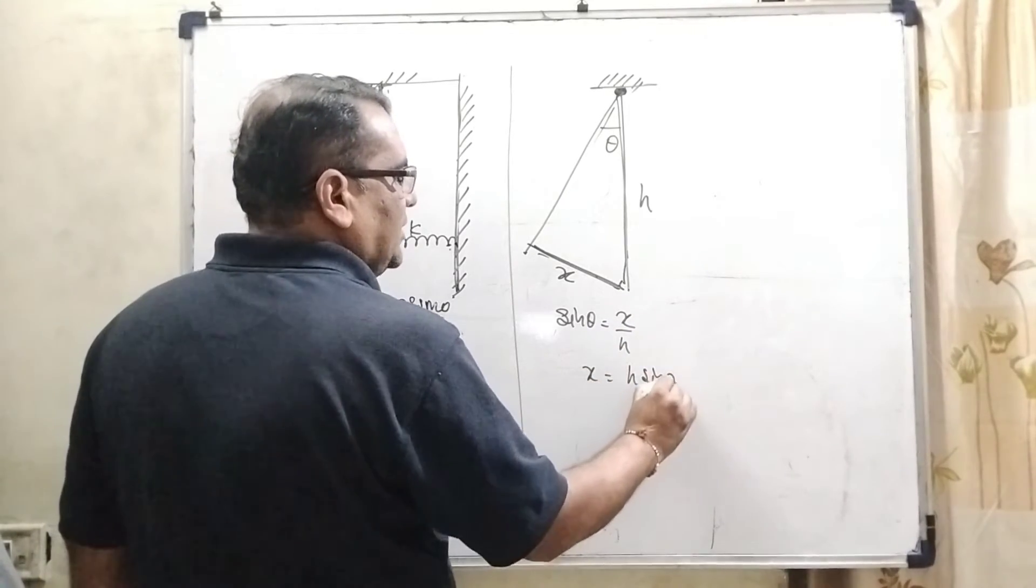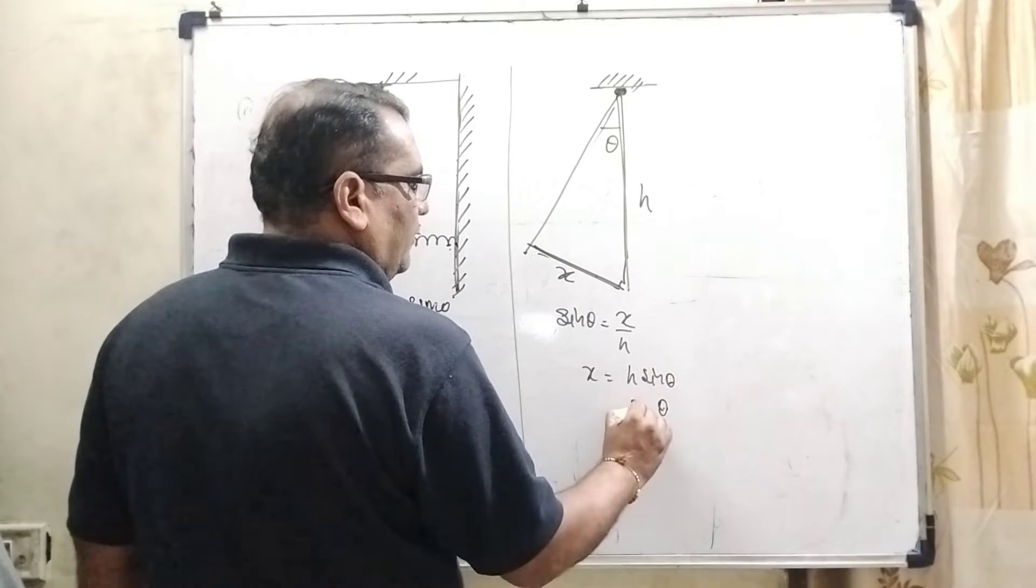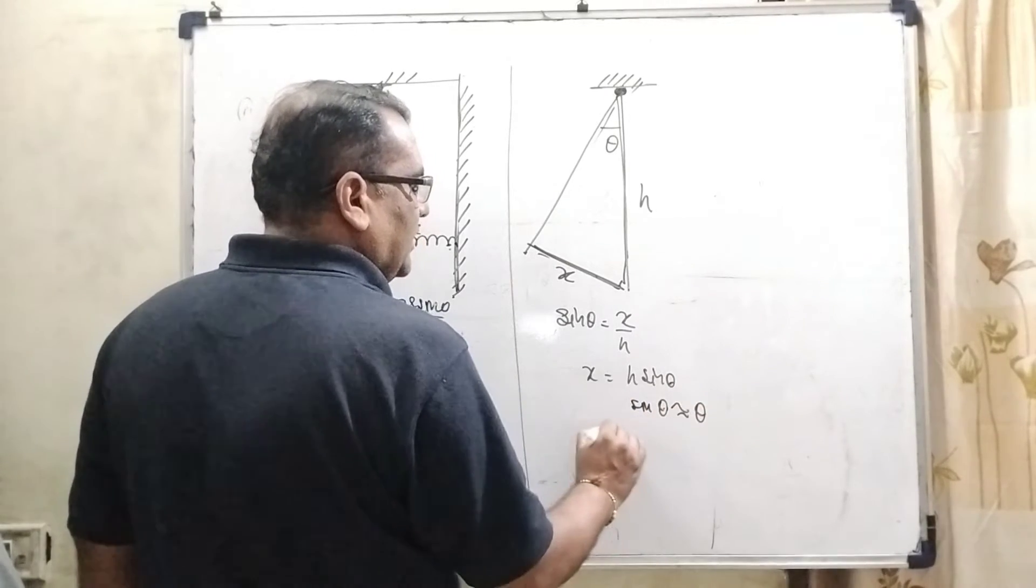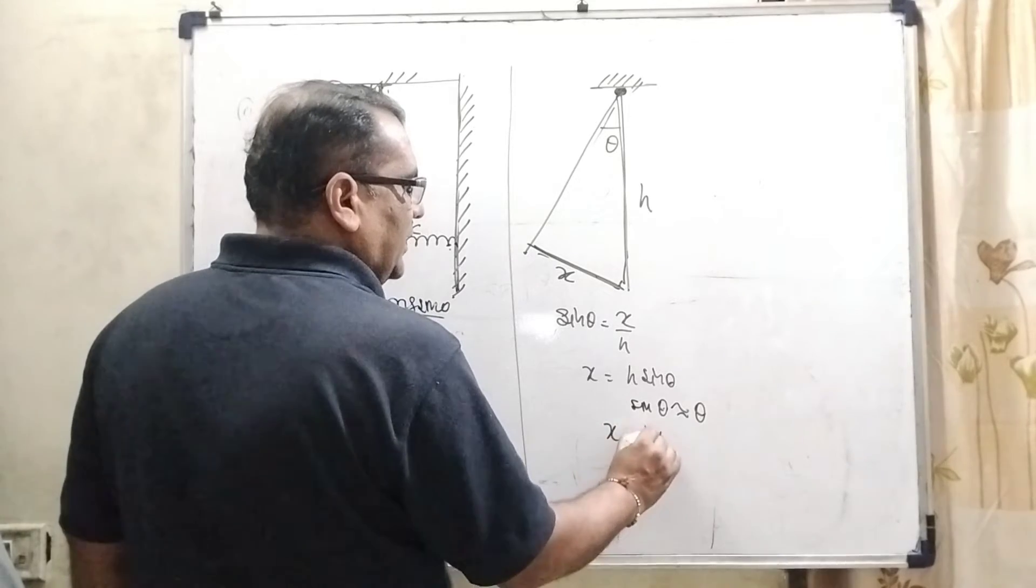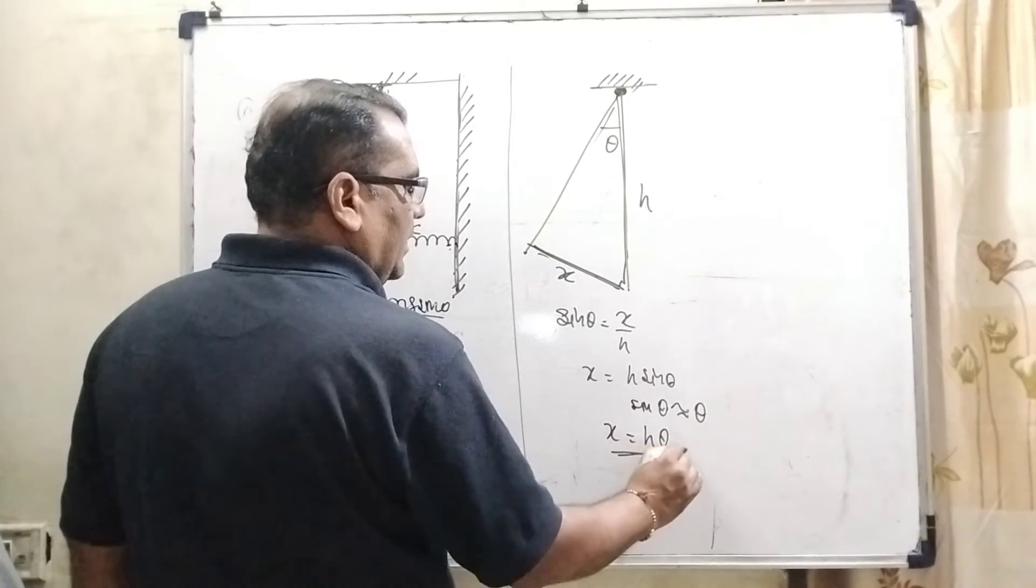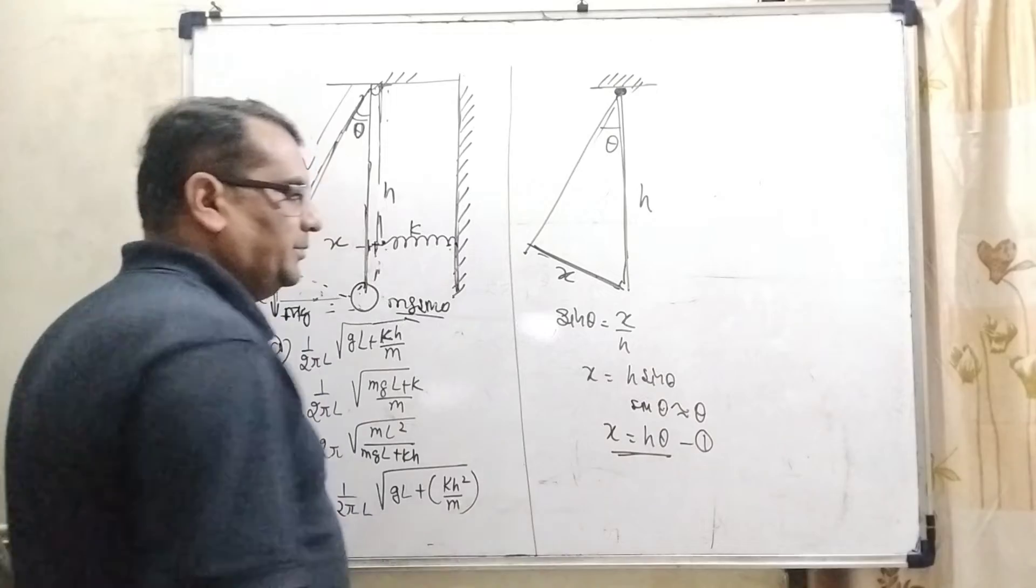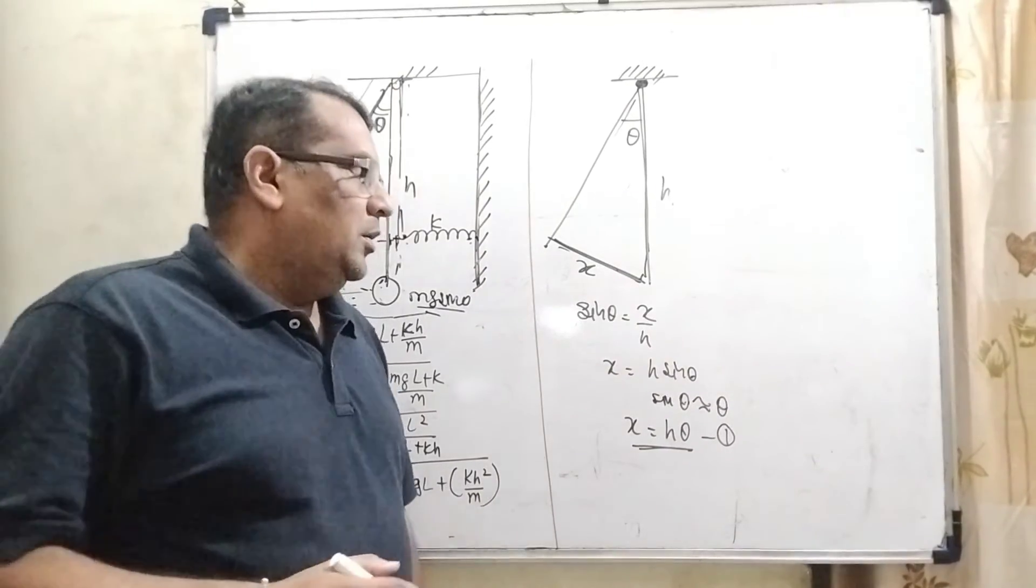Then sin theta is equal to perpendicular X upon H. Then X equal to H sin theta. Here, theta is very small. So, therefore, sin theta when theta is very small can be written as theta. So, X equal to H theta. That is first equation.